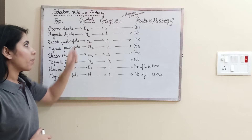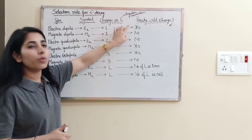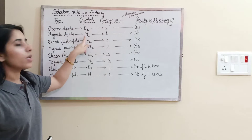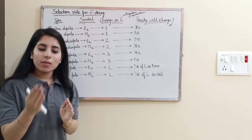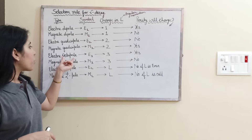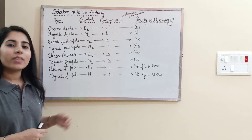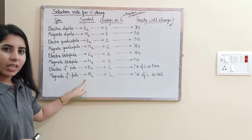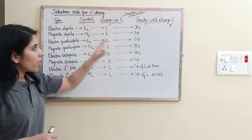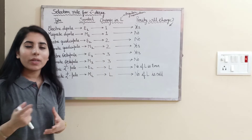Electric dipole is the first type; its symbol is E1. The change in angular momentum is 1, and parity will change. Magnetic dipole has symbol M1. For dipole the symbol suffix is 1, for quadrupole it is 2 (E2, M2), for octopole it is 3, and for electric and magnetic 2-to-the-power-L pole it is EL and ML. You need to focus on the change in angular momentum, the type, and parity together.